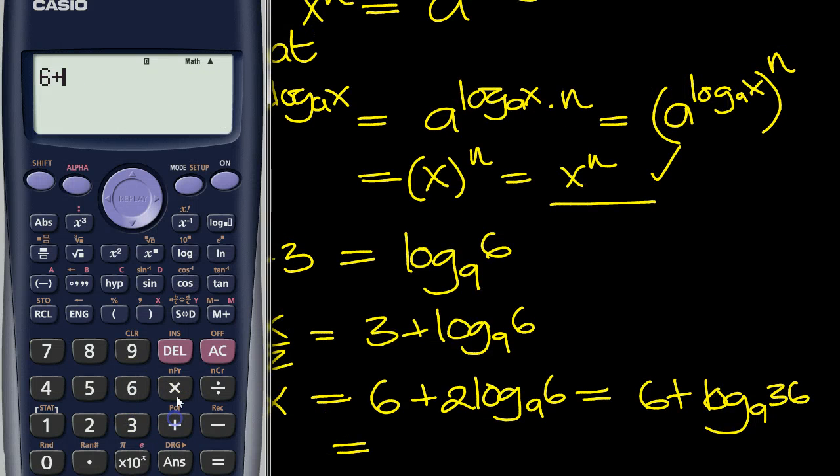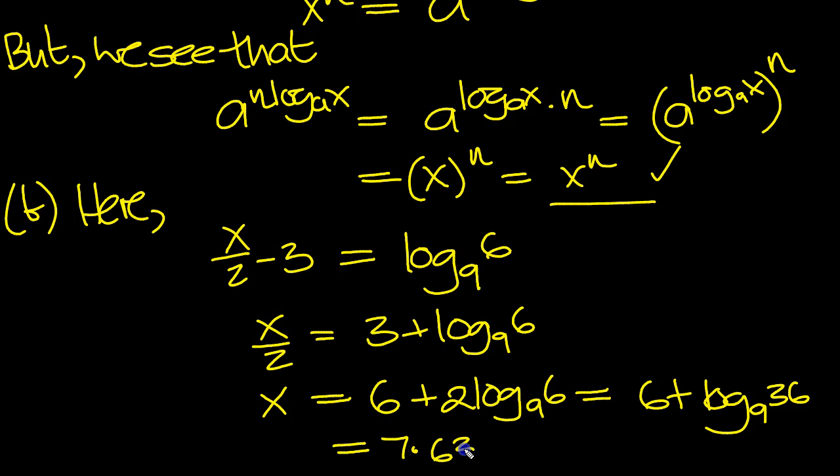So 6 plus log of 9 of the number 36. 7.631 to 3 decimal places. 7.631, and that's to 3 decimal places. That's b.